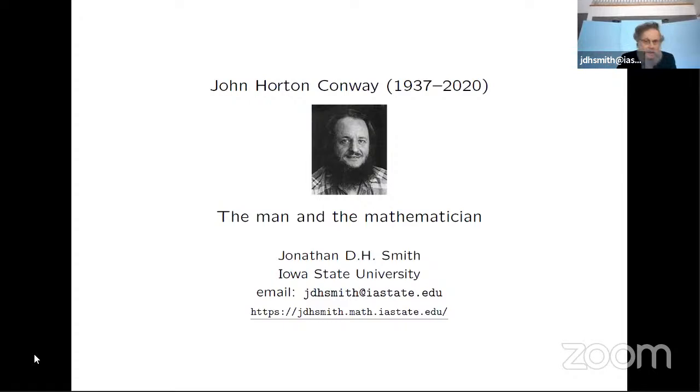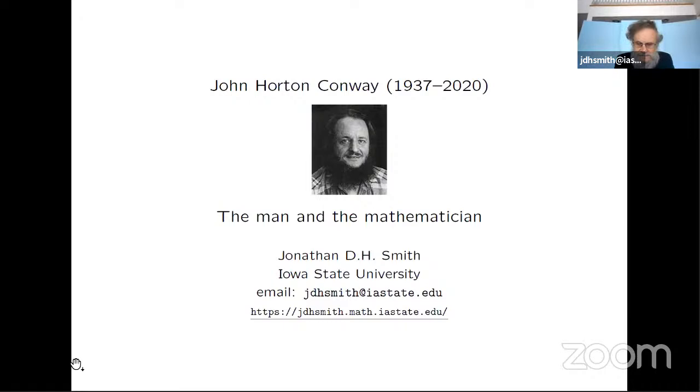So let's go to the next slide. And I will start with a little bit of the family history, obviously an important part of the man. So John Horton Conway was the son of Cyril Horton Conway and his wife, Alice. Boyce was her maiden name.